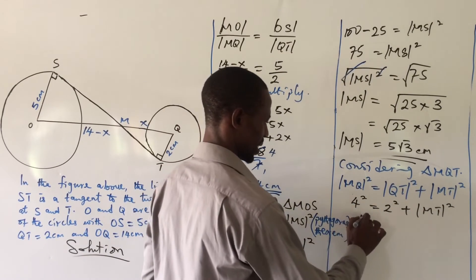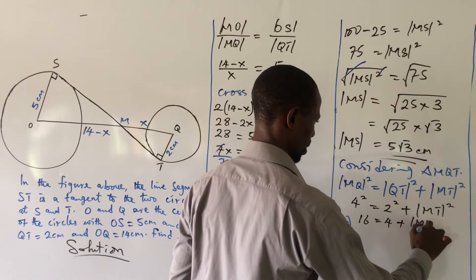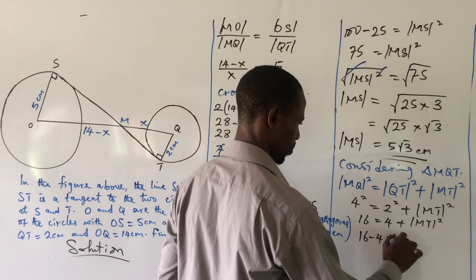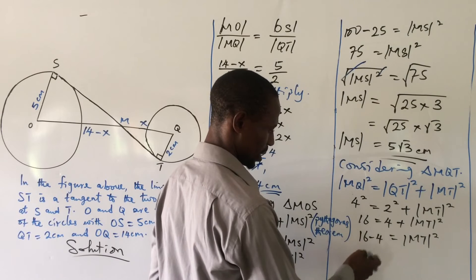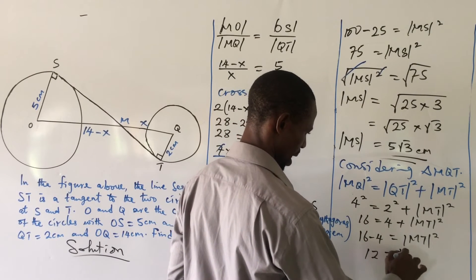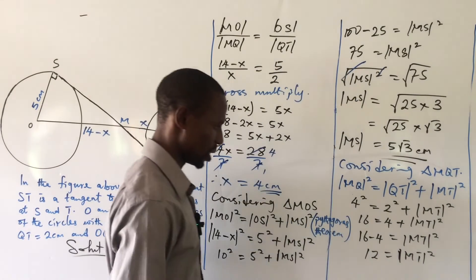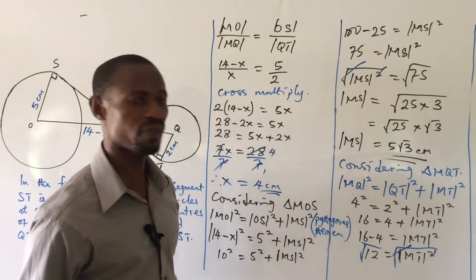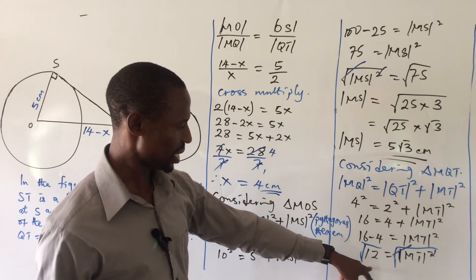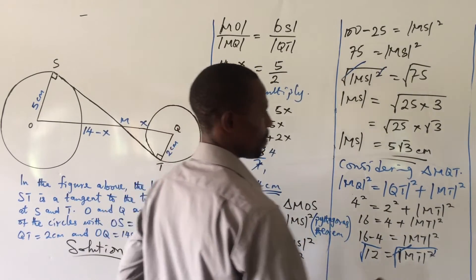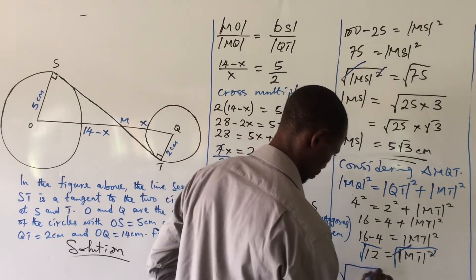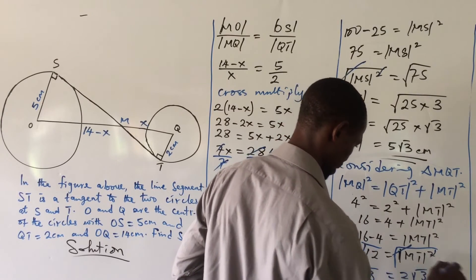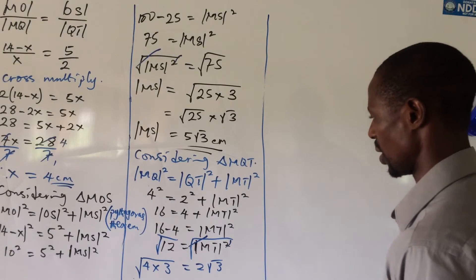4 squared gives 16 and 2 squared gives 4, so 16 = 4 + MT squared. Collecting like terms: 16 − 4 = MT squared, giving us 12 = MT squared. Taking the square root of both sides and expressing 12 in surd form: √12 = √(4 × 3) = √4 × √3 = 2√3. So MT = 2√3.